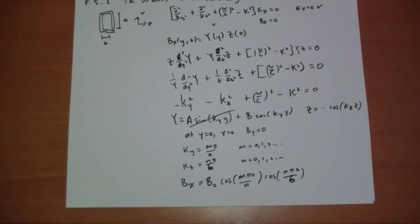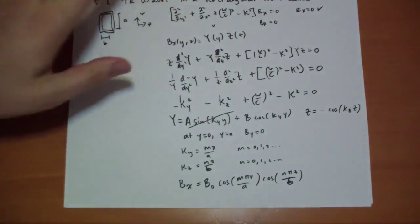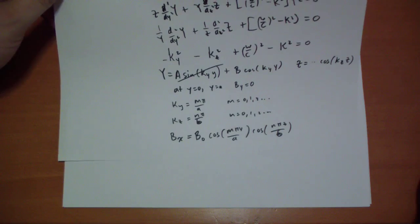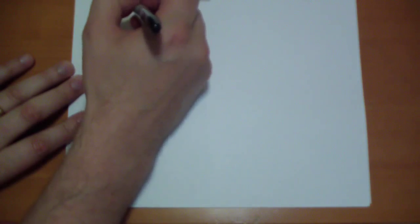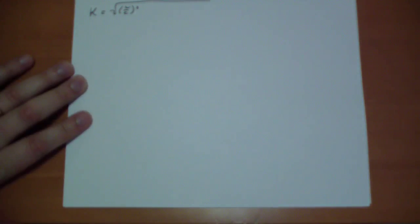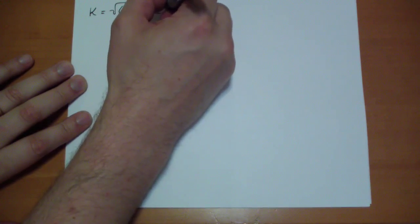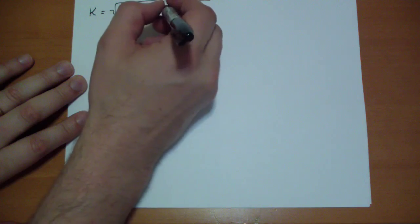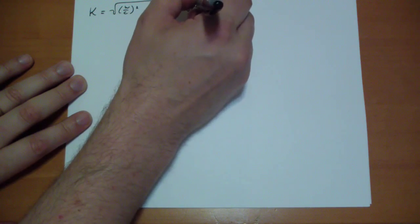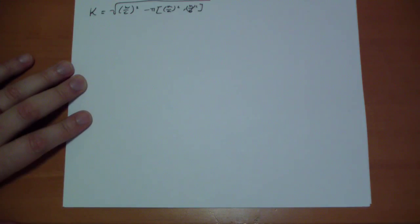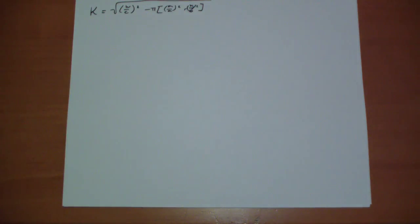But regardless, the wave number Kappa. Let's solve for Kappa. Let's solve for this dude. What is he equal to? We get Kappa is equal to. So Kappa is equal to the square root of a whole bunch of stuff. Omega over C squared. Then we have pi times M over A squared plus N over B squared. And we get, that's our Kappa for the wave traveling down the wave guide.